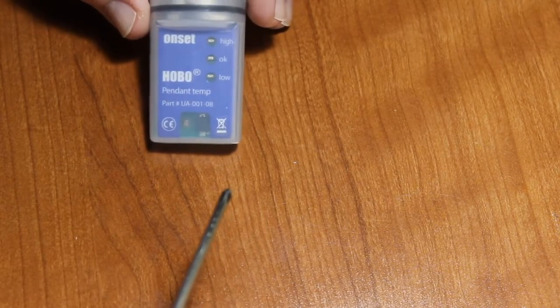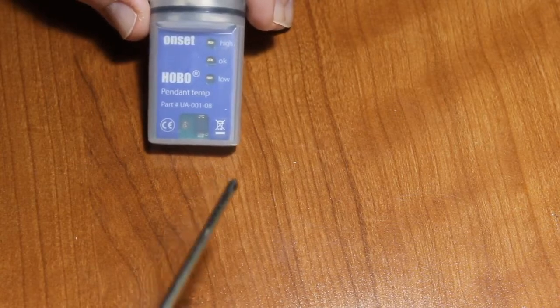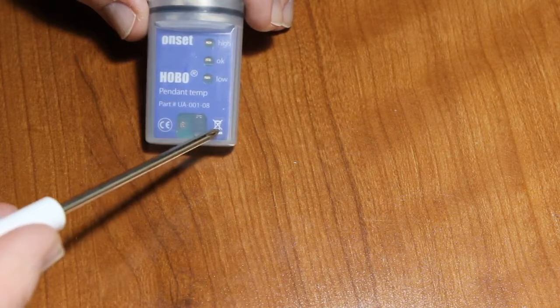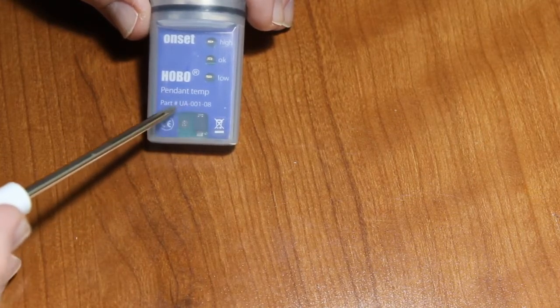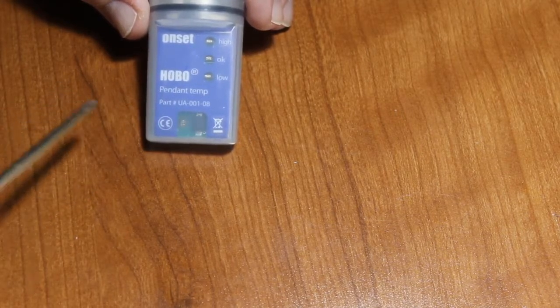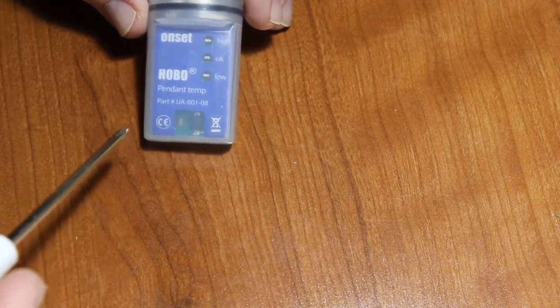A couple of things to look at before we disassemble it. This area right here between the CE mark and the wheelie bin, you can see there is a little window cut out of this label. This blue part is an internal label, we will show you how that comes out.